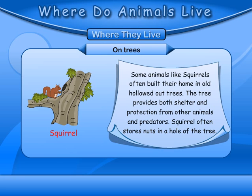On trees: Some animals like squirrels often build their homes in old hollowed-out trees. The tree provides both shelter and protection from other animals and predators. Squirrels often store nuts in a hole of the tree.